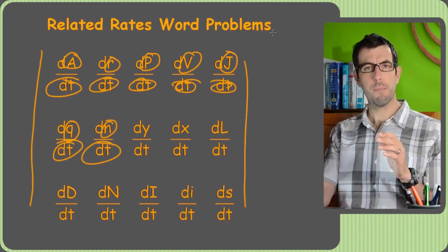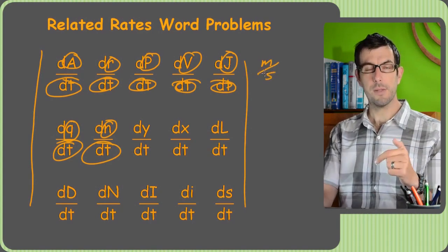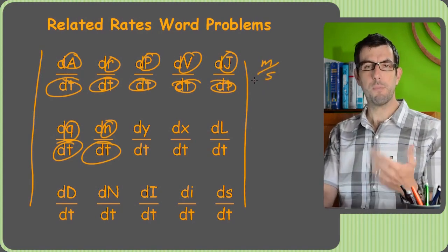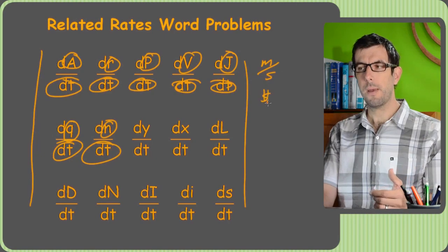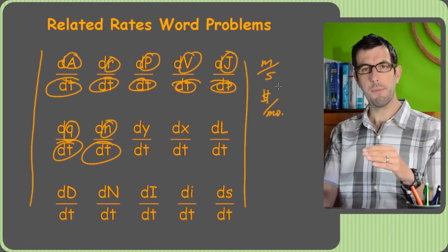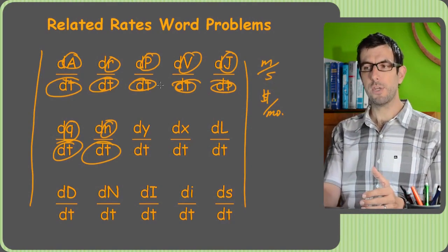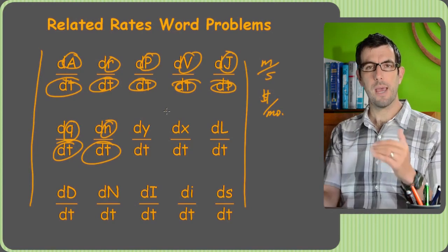So you'll notice that if we talk about how fast someone's driving, it's meters per second, right? There's time downstairs. If I asked you, how much do you pay in rent? Well, it's dollars per month. So a unit of time is always in the denominator whenever you're talking about rates. And that's why every derivative we're going to take is going to have a t downstairs.